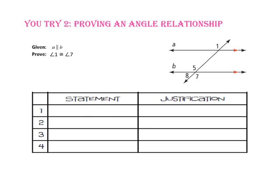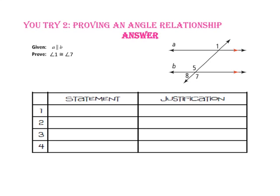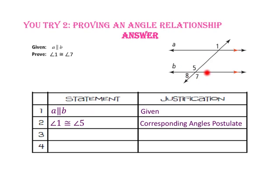Pause the video and do You Try number 2. Line A is parallel to line B. For step 2, angle 1 is congruent to angle 5 because they are corresponding angles. For step 3, angle 5 is congruent to angle 7 because of the Vertical Angles Theorem. For step 4, since both angle 1 and angle 7 are congruent to angle 5, angle 1 is congruent to angle 7 by the Transitive Property of Congruence.